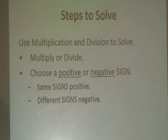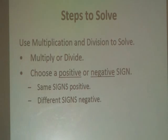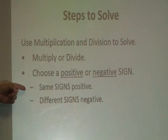We'll use multiplication and division to solve. We'll first start by just multiplying and dividing the numbers, and then we'll choose a positive or a negative sign. Keep in mind that the same signs are positive and different signs are negative.